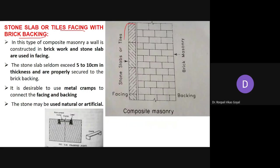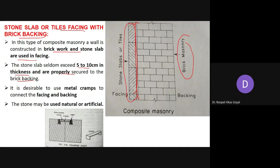Next is stone slab or tiles facing with brick backing. Here on the facing side, stone slabs or tiles are used and on the back side brick masonry is used — a combination of brickwork and stone slab on the front side. Stone slabs seldom exceed 5 to 10 centimeters in thickness and are properly secured to the brick backing. It is desirable to use metal cramps to properly connect the facing and backing, since two different materials are being used.